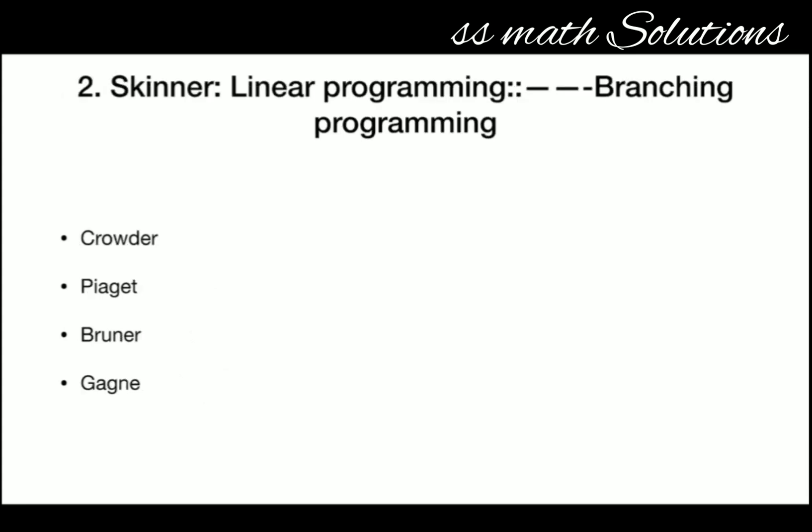Next question: Skinner is related to linear programming. Then who is related to branching programming — Crowder, Piaget, Bruner, or Kagné? The answer is Crowder. Crowder is related to branching programming.